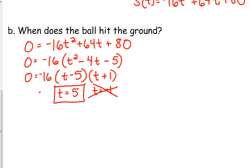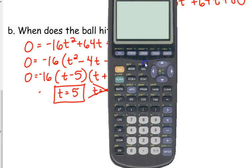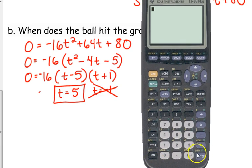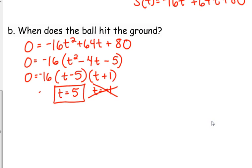Now yes, they would expect this to be a calculator inactive question, but right now we do have our calculators. So it might be a good idea to check that and just make sure negative 16 times 5 squared plus 64 times 5 plus 80. And make sure that that does equal 0. And it does. Okay? So 5 seconds.